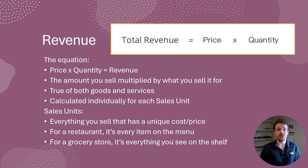The equation to calculate your revenue is simple: price times quantity. In other words, your revenue is equal to the price that you sell something for, multiplied by the amount that you sell. This is true whether your business sells products or provides a service. The only distinction is that in a service-based business, the quantity is typically hours of your time rather than amounts of an item.